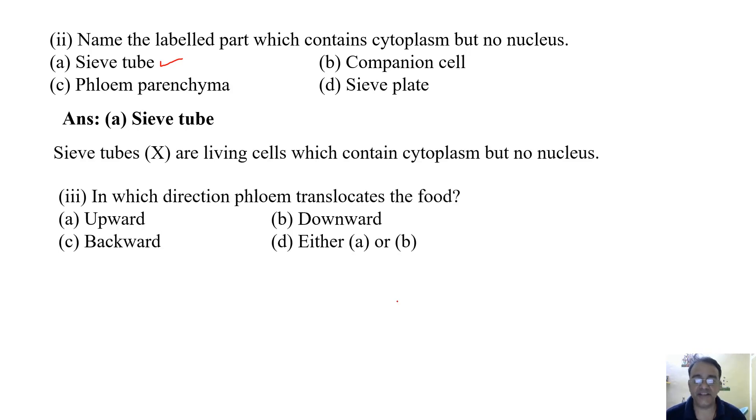In which direction does phloem translocate the food? Upward, downward, backward, or either A or B? Either A or B. Actually the movement of food in phloem can be upward or downward depending on the needs of the plant. So the correct option is D.